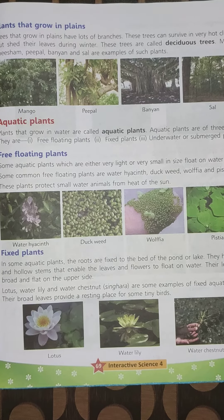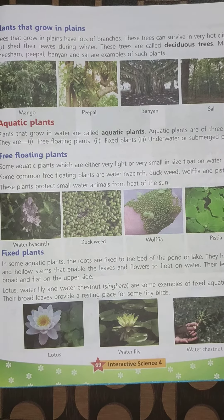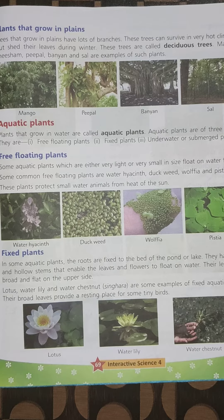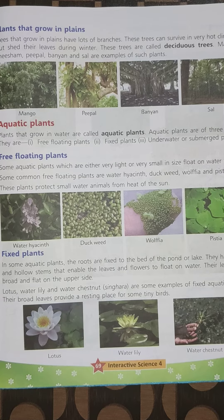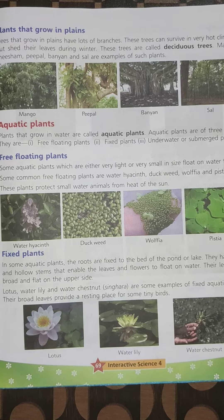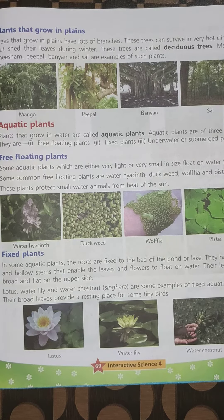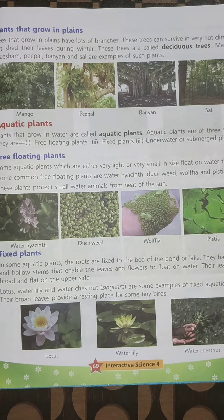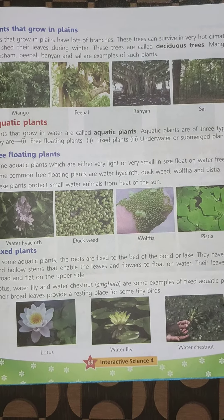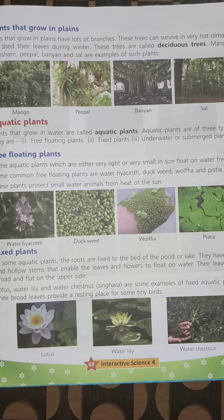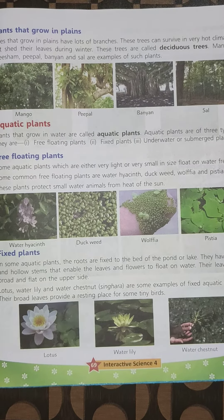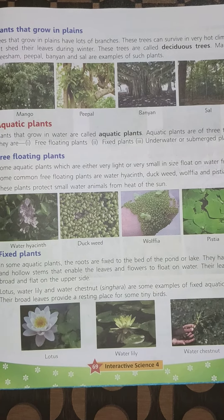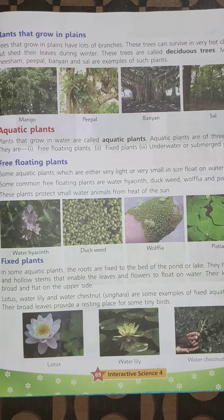Some common free floating plants are water hyacinth, duckweed, wolfia, and pistia. These plants protect small water animals from the heat of the sun.